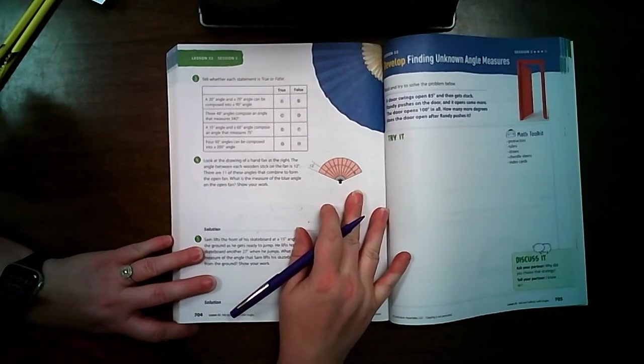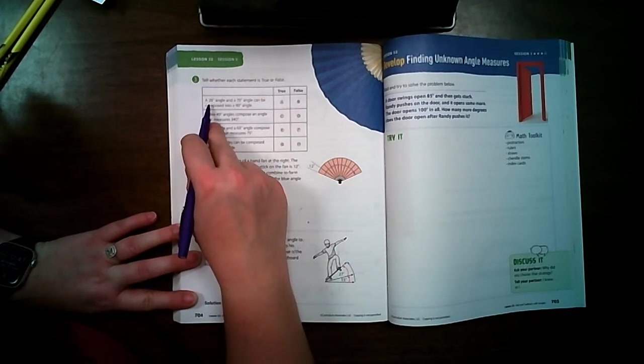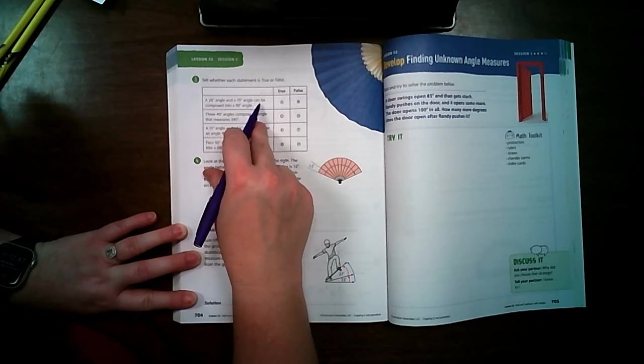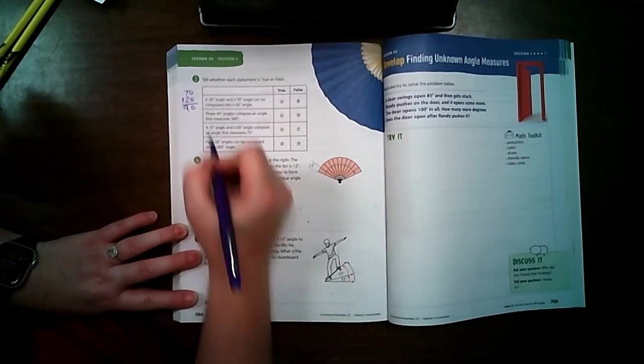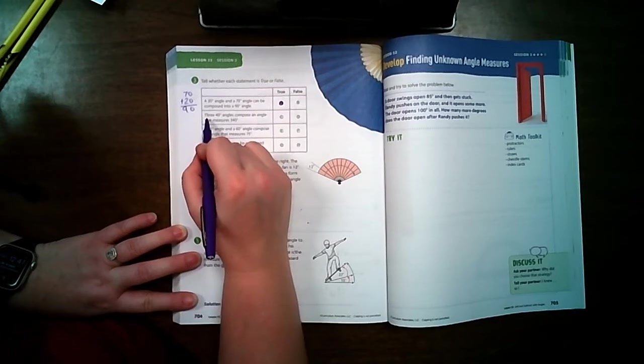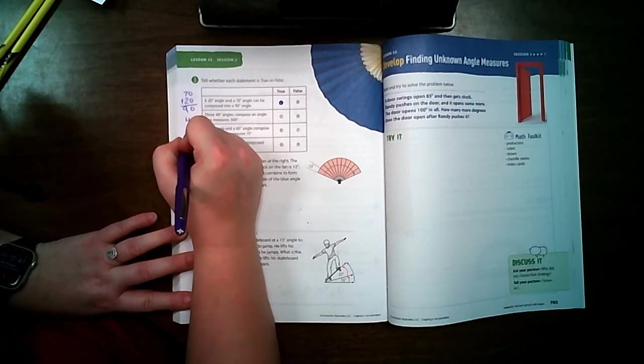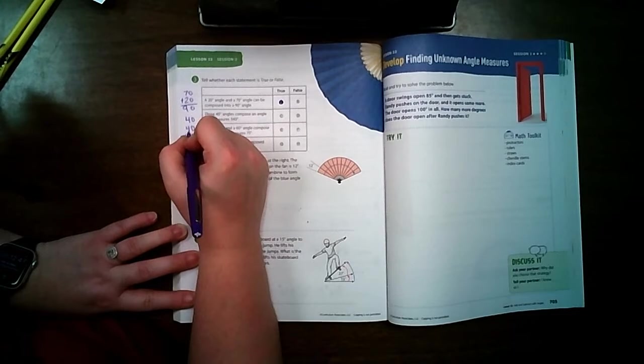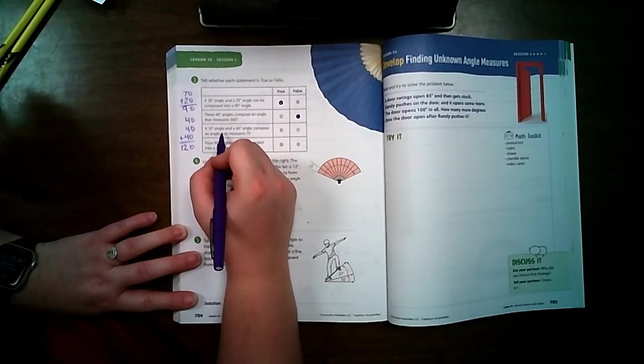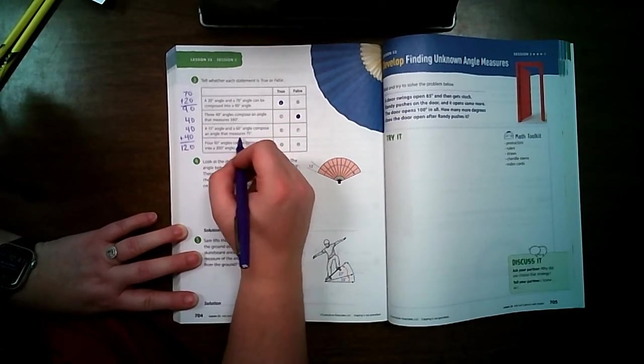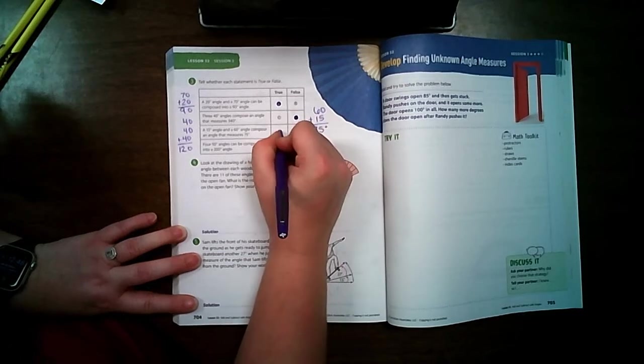Take a look at page 704 at the top. Tell whether each statement is true or false. A 20 degree angle and a 70 degree angle can be composed into a 90 degree angle. Well, 70 plus 20 equals 90, so that is true. Three 40 degree angles can compose an angle that measures 340. So let's add 40 three times: 4, 8, 12. That is not 340, so that is false. A 15 degree angle and a 60 degree angle compose an angle that measures 75 degrees. 60 plus 15, 6 plus 1 is 7. So that one is true.